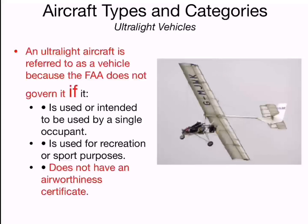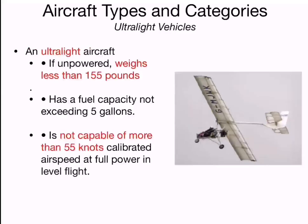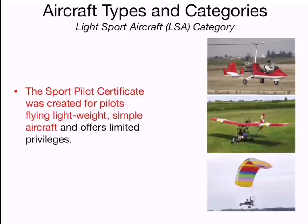There are also ultralight vehicles. An ultralight aircraft is referred to as a vehicle because the Federal Aviation Authority does not govern it if it is used or intended to be used by a single occupant. It is basically used for recreation or sport purposes and does not have any airworthiness certificate. An ultralight aircraft, if powered, weighs less than 155 pounds, has a fuel capacity not exceeding five gallons, and is not capable of more than 55 knots calibrated airspeed at full power in level flight.